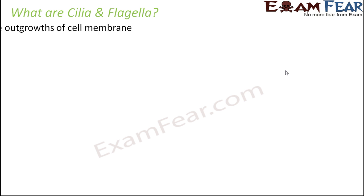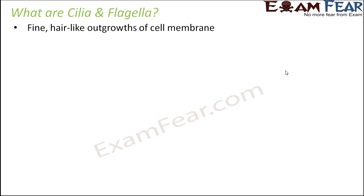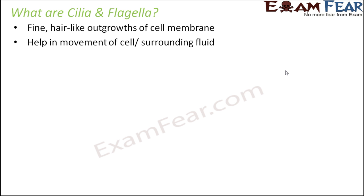Cilia and flagella are fine hair-like outgrowths of the cell membrane. From the cell membrane itself there are small thin outgrowths termed as cilia and flagella. These are two different things: cilia are relatively shorter in length and flagella are longer in length. They help in movement of the cell or the surrounding fluid — either the cell itself moves, or the cell stays stationary while the surrounding fluid moves.